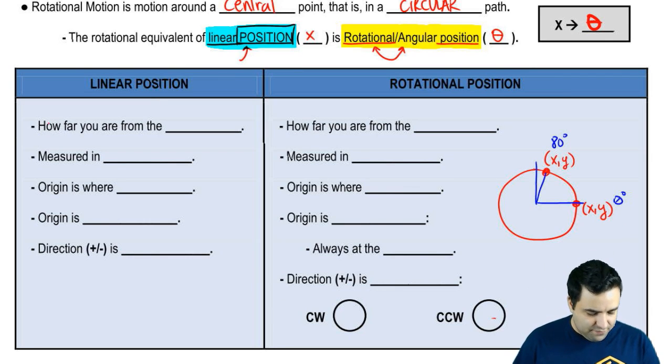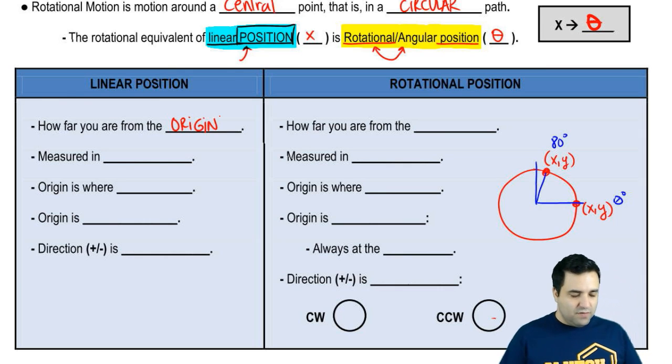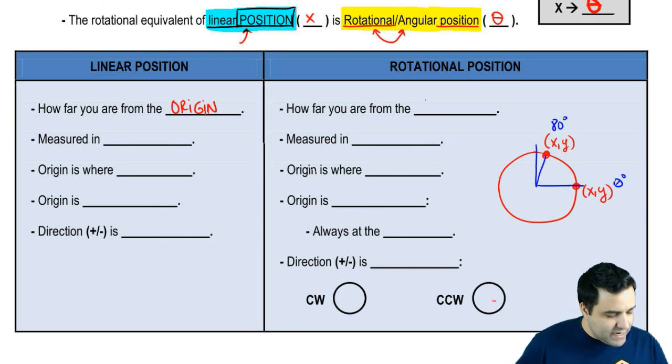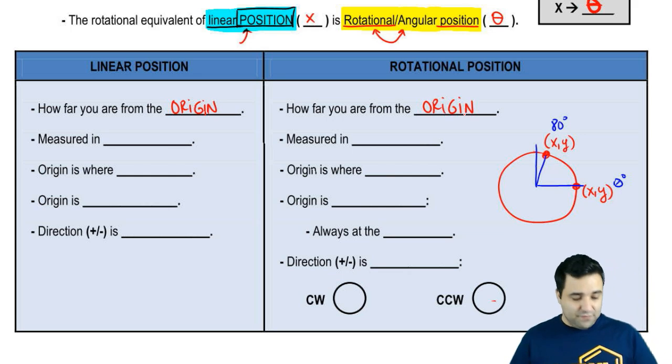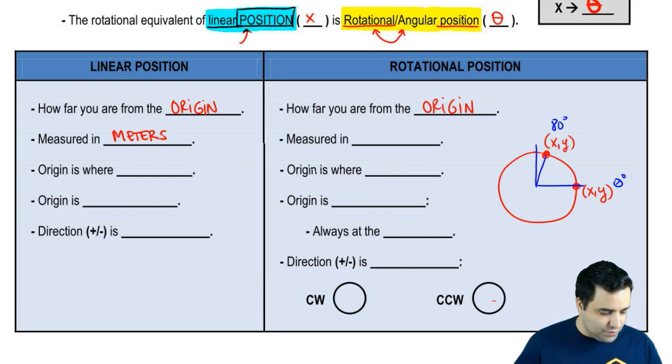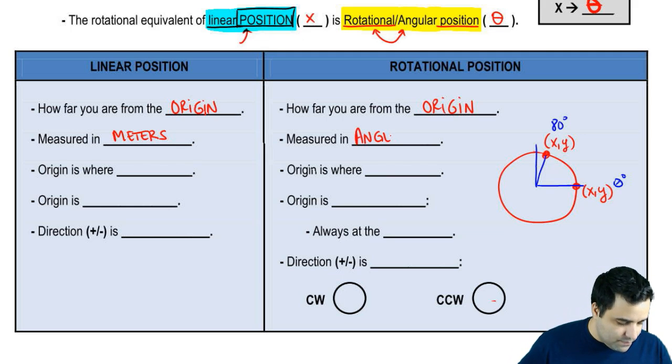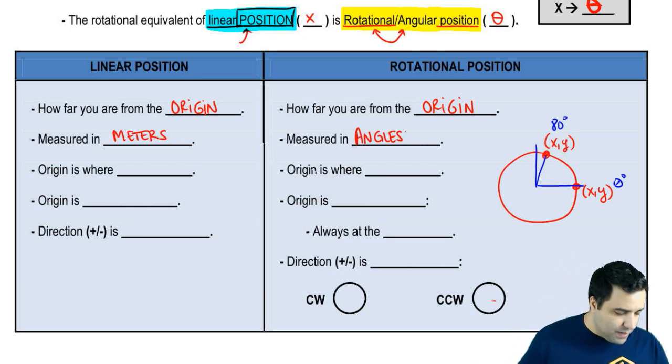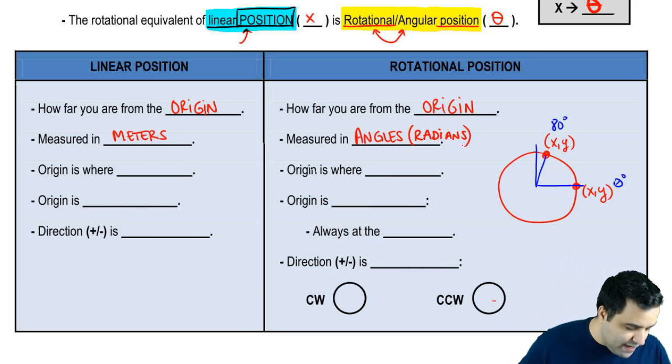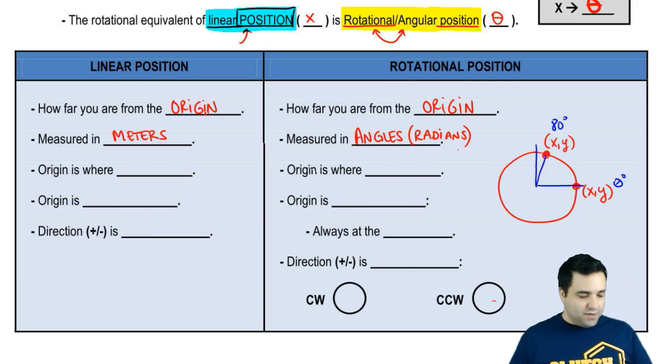So position is defined as how far you are from the origin. You may remember this, it's your distance from the origin. Rotational position is the same thing, it's how far you are from the origin. The difference is that the first one, we measure using meters, and the second one, we measure using angles. Now, you could do either radians or degrees, but we're going to use radians most of the time. So we're going to use radians, which is abbreviated rad.